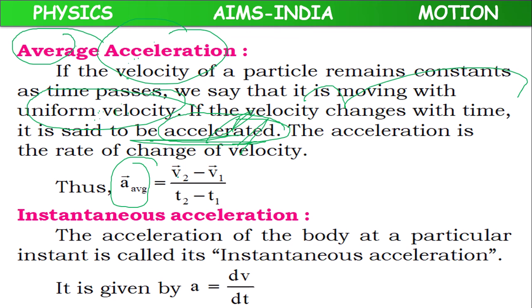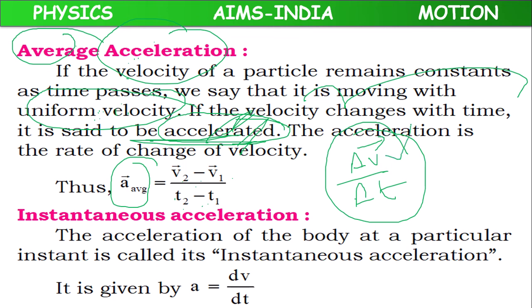The formula for average acceleration is: final velocity minus initial velocity divided by final time minus initial time, or ΔV̄/ΔT — change in velocity divided by change in time. This tells us how much velocity changed in a given time interval. The units and dimensional formula are the same as for acceleration.